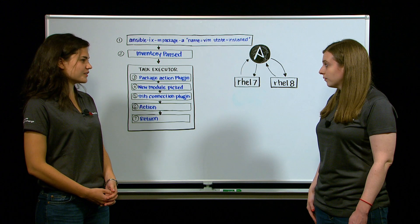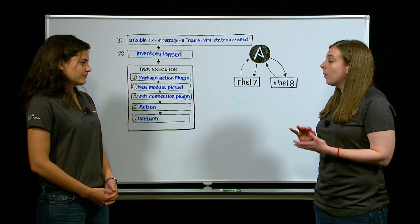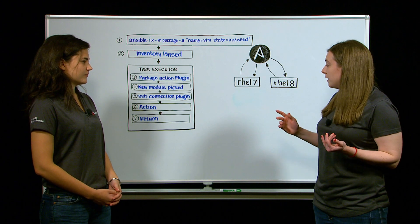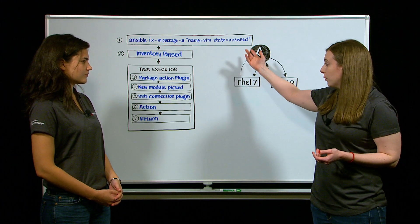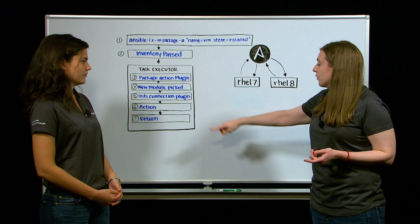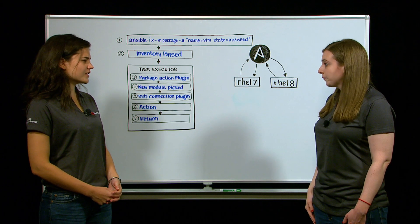Okay, and what's the task executor? The task executor is a core part of the Ansible code. It takes in your module and parameters and then it orchestrates the rest of the Ansible command. Okay, so what's the first thing it does?